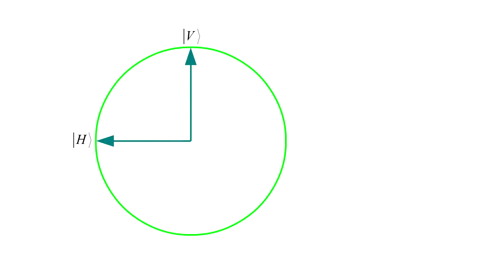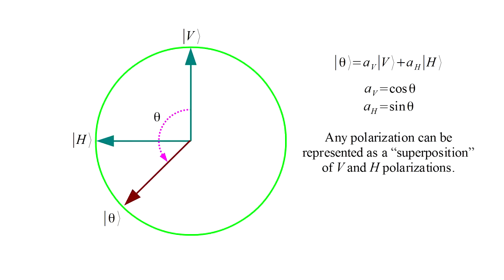By combining the V and H polarizations in different ways, we can produce a wave polarized at any angle theta. We simply need to add appropriately scaled V and H states. The scaling coefficients are the cosine and sine of the angle theta. We say that any polarization can be represented as a superposition of V and H polarizations. In this sense, we can think of there being two fundamental polarizations, the V and H states, and that these form a basis for all possible polarizations.